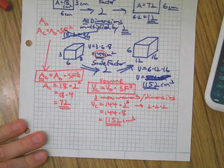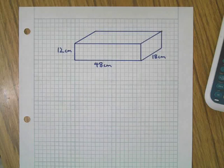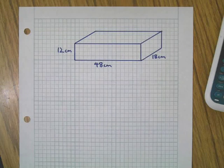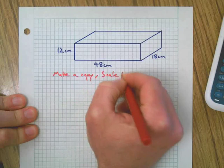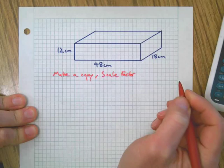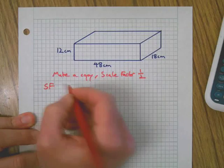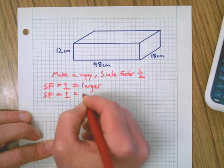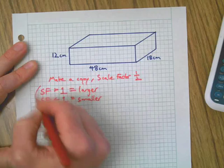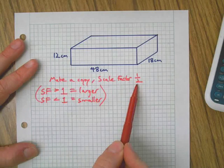Let's do an example problem. We've got a rectangular prism and we want to make a scale copy with a scale factor of one half — we're making it smaller. Keep in mind: if the scale factor is greater than one it gets larger; if the scale factor is a fraction less than one, you're making a smaller copy. So we have this large object, like a cereal box, and we want a scale factor of one half.